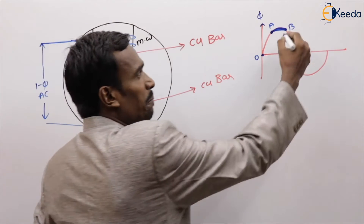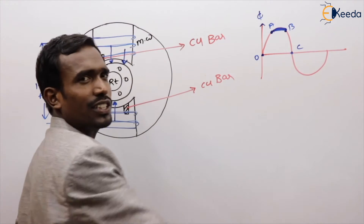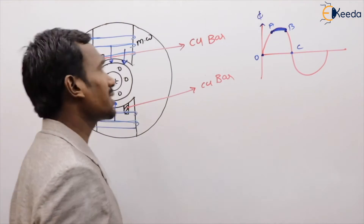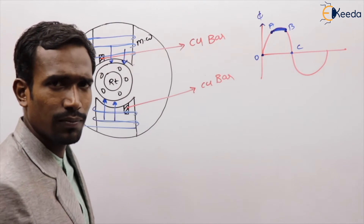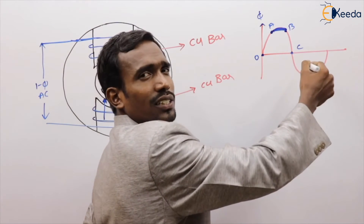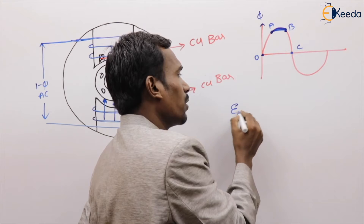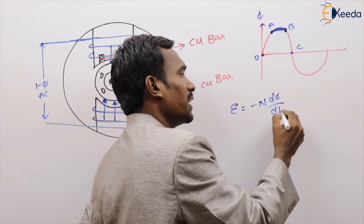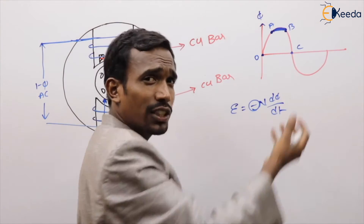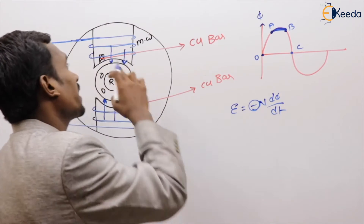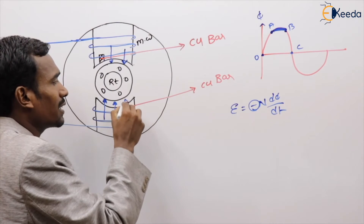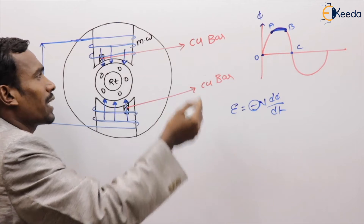From B to C, the flux is reducing in nature — there is a rate of change of flux. If the rate of change of flux is there, the flux is induced in the shaded rings. But here it will add to the main field flux, because this is in the negative direction. We know E = -N dΦ/dt, so due to the minus sign it is in the opposite direction, and the main field flux is in the reducing direction. Our induced flux is in addition. So the total flux is concentrated at the shaded part of the main pole.